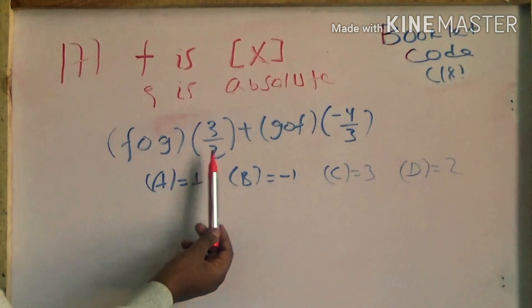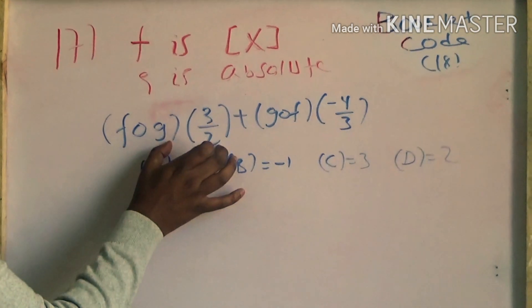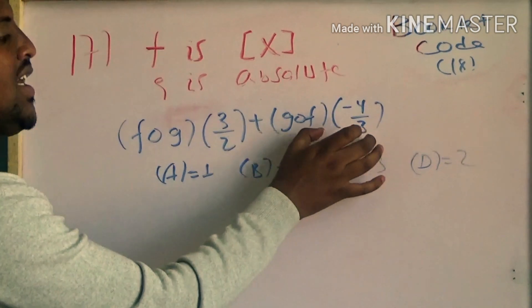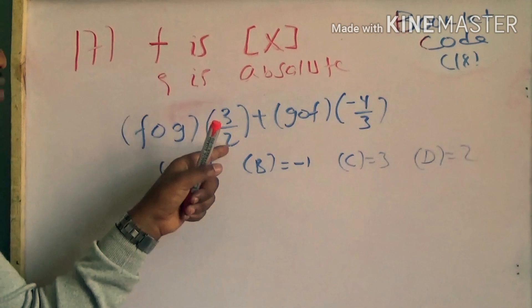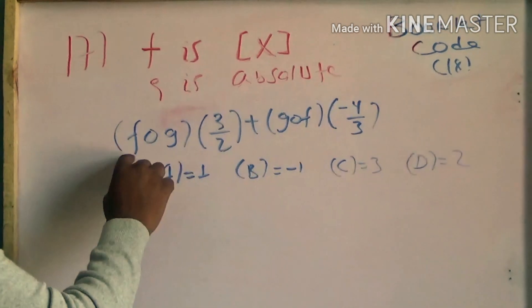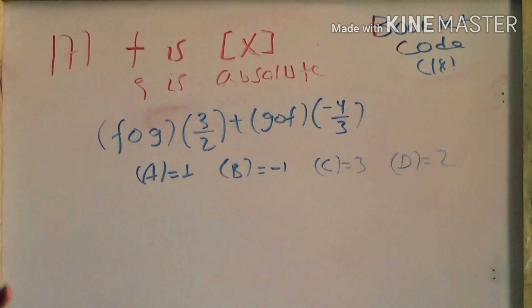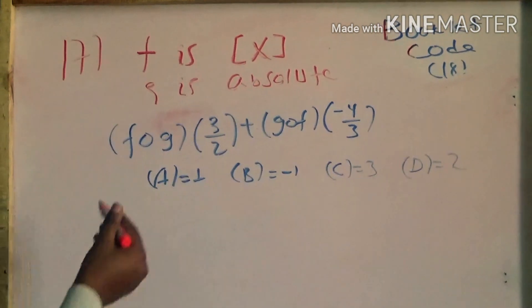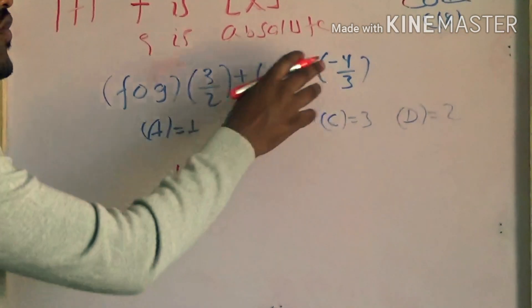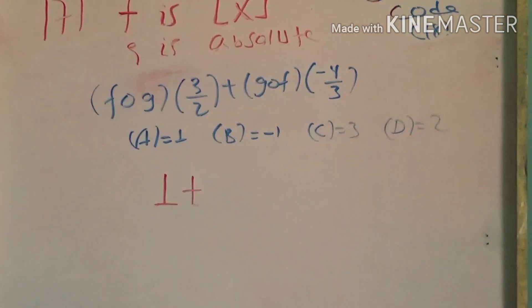So this is f of 3 over 2 plus f of negative 4 over 3. f of 3 over 2 equals the greatest integer of 3 over 2. f of negative 4 over 3 equals f of negative 4 over 3. For x equals 3 over 2, we apply the absolute value function. The absolute value of 3 over 2 equals 1.5. The greatest integer function of 1.5 is 1, so f of 3 over 2 equals 1. For negative 4 over 3, that is approximately negative 1.3.